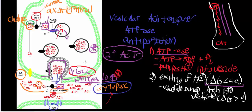The choline gets reuptaken by the choline transporter and recycled with another reaction of choline acetyltransferase to make acetylcholine. In the next video, we're going to look at what happens with acetylcholinesterase, and after that, we'll look at the metabolism of acetate. See you in the next video.